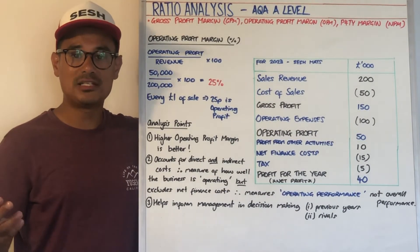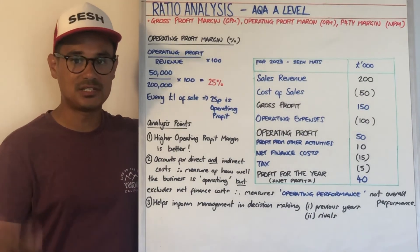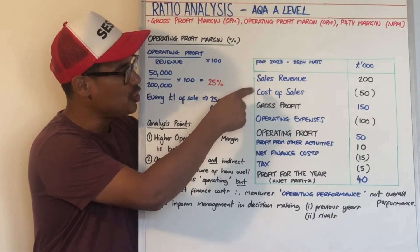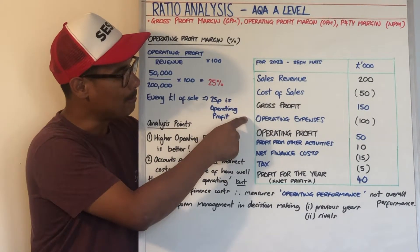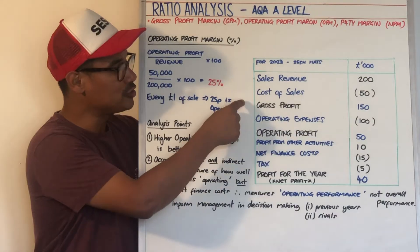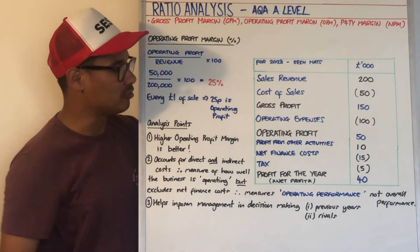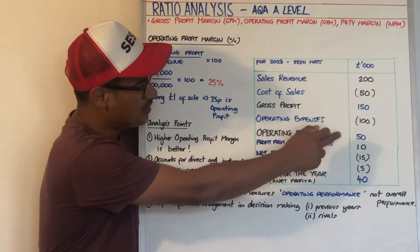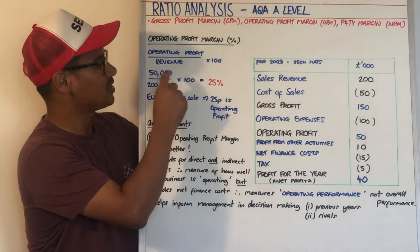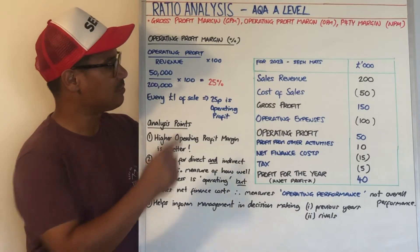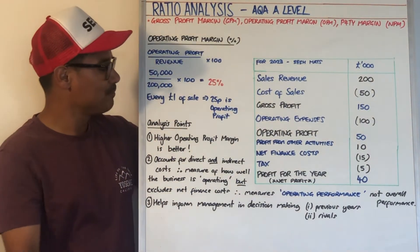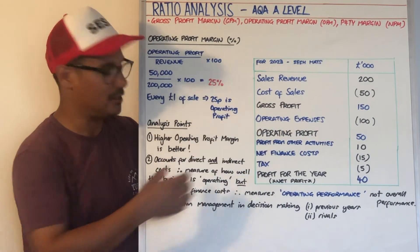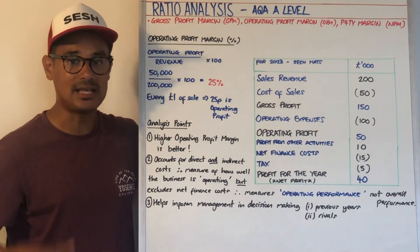Now let's look at operating profit margin. The formula is operating profit divided by revenue, times by 100. To calculate operating profit, you do sales revenue minus cost of sales minus operating expenses — or gross profit minus operating expenses. From this income statement, operating profit is £50,000, divided by £200,000, times by 100, giving 25%. That means for every £1 of sale, 25 pence is operating profit. Operating essentially means day-to-day, so it's day-to-day profit.